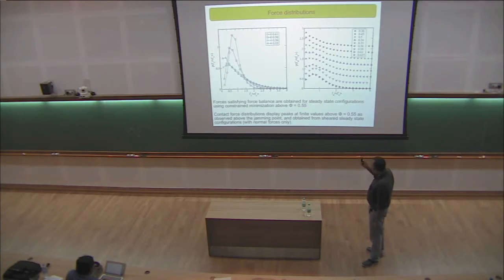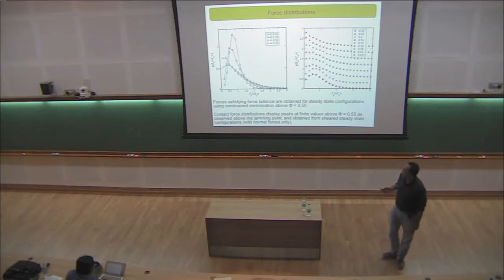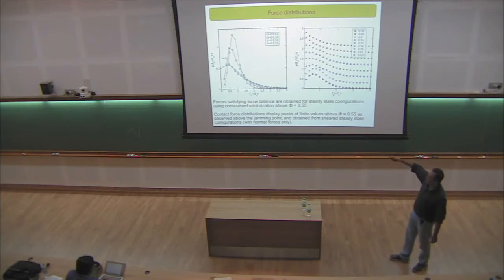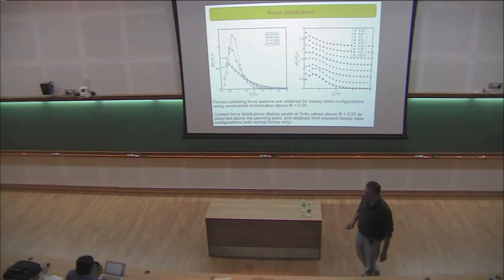One particular detail is that above 55%, this threshold density, we do have force distributions that have finite force peaks, which has been seen as a characteristic of jamming.